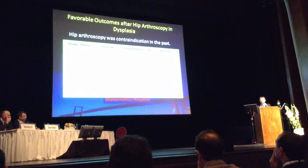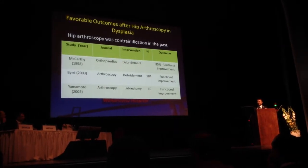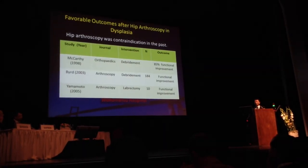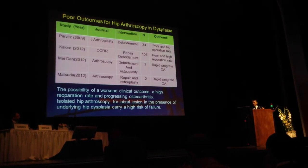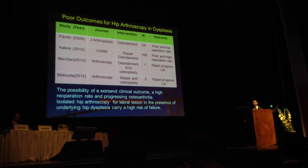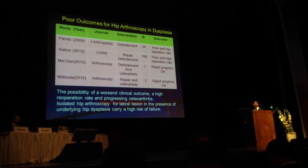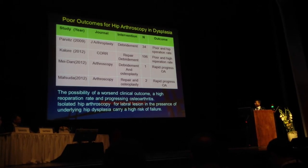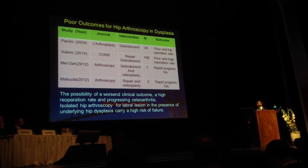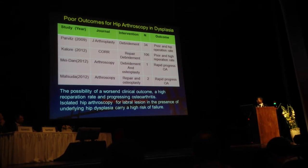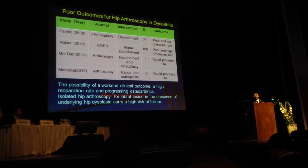Hip arthroscopy was a contraindication in the past, but there are several studies demonstrating favorable outcomes after hip arthroscopy for dysplasia. However, recently there are several studies demonstrating the possibility of worse clinical outcomes, higher re-operation rates, and progressive osteoarthritis.